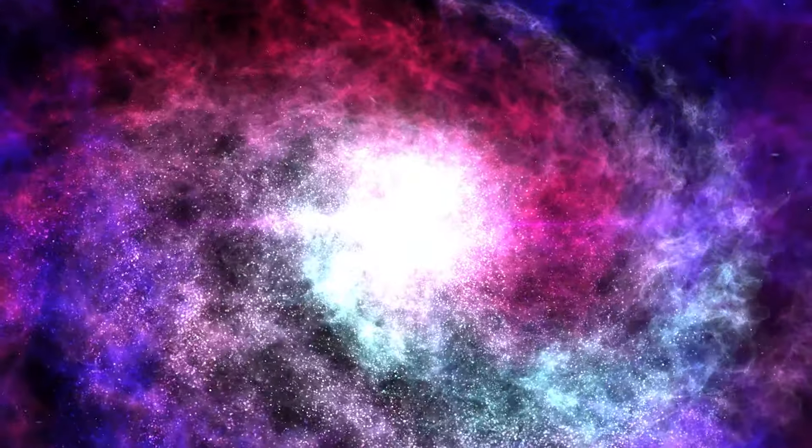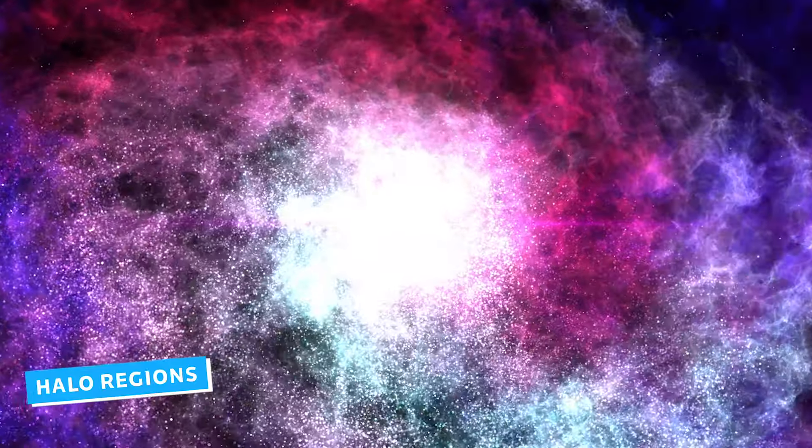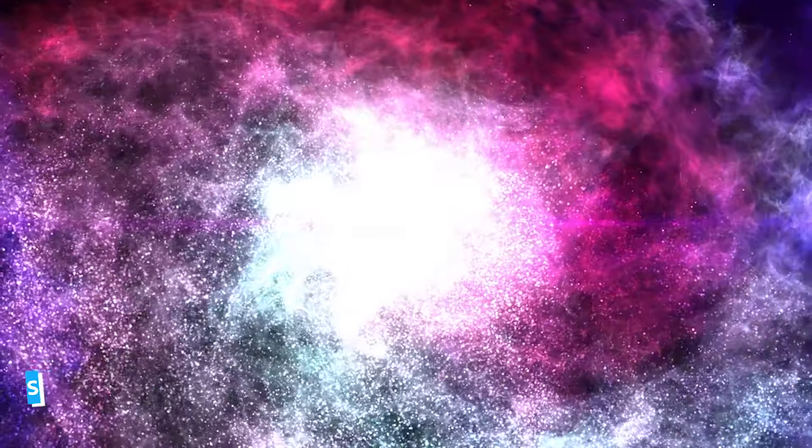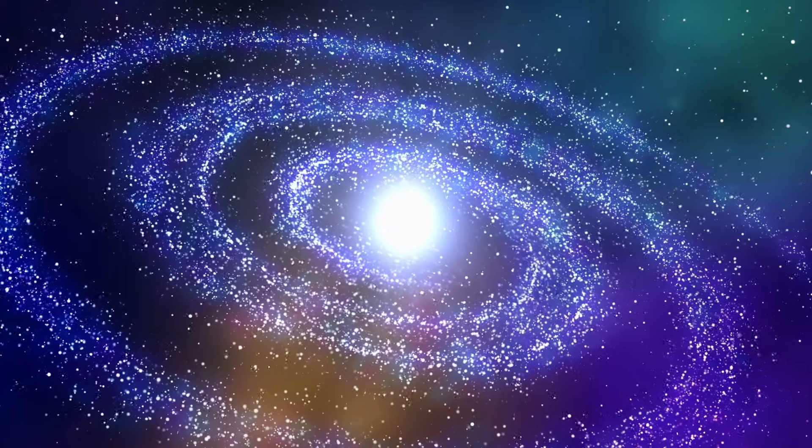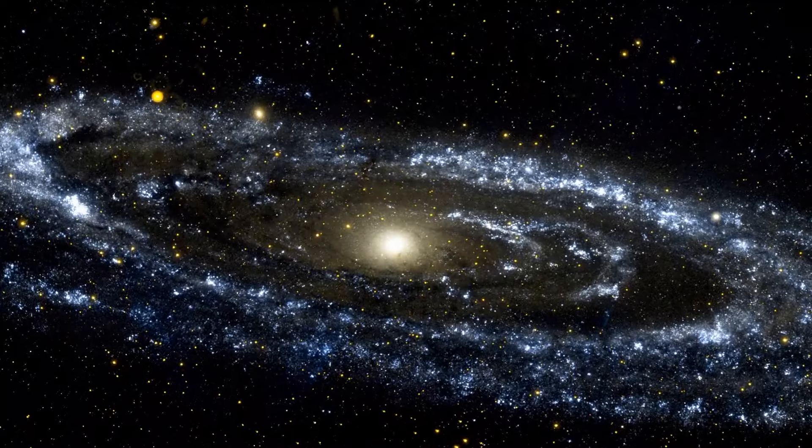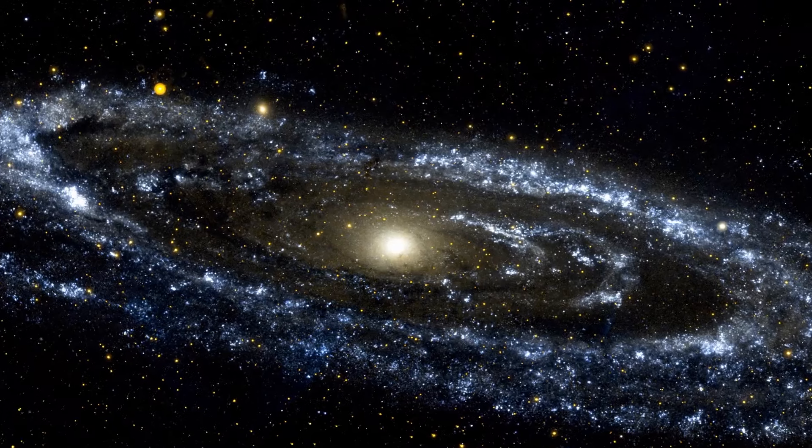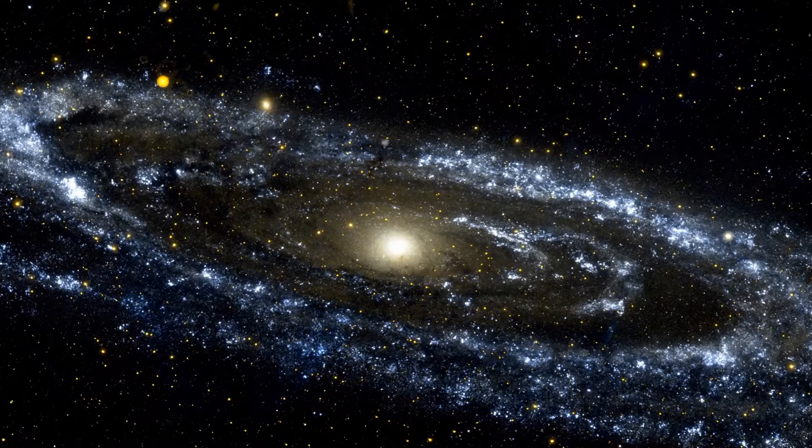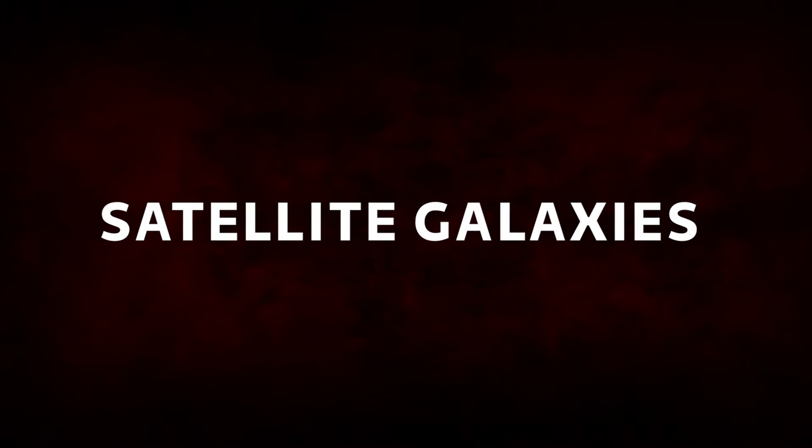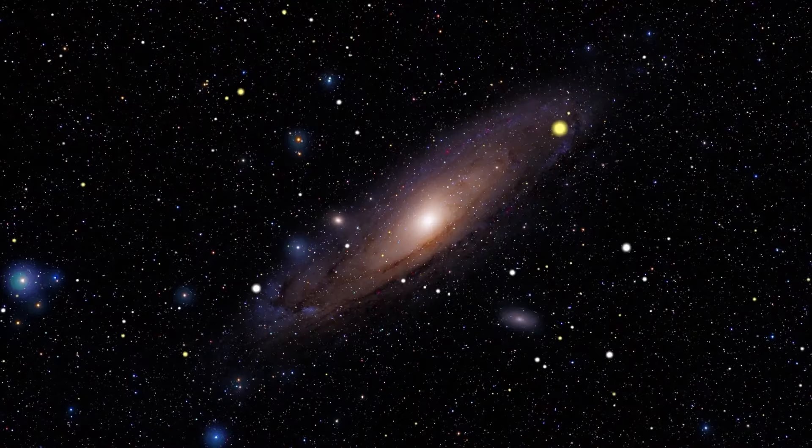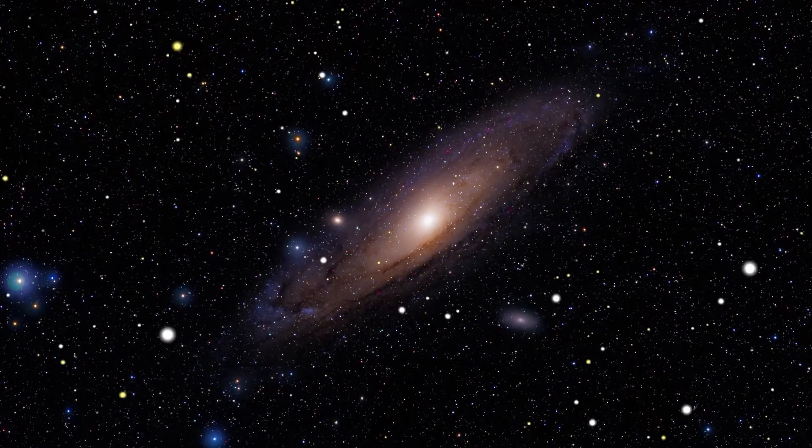Globular clusters are typically found in the halo regions of galaxies, where they orbit in a roughly spherical distribution around the galactic center. In the case of the Andromeda Galaxy, it hosts several hundred known globular clusters distributed throughout its halo. Satellite Galaxies. Satellite Galaxies are smaller galaxies that orbit larger galaxies like the Andromeda Galaxy.